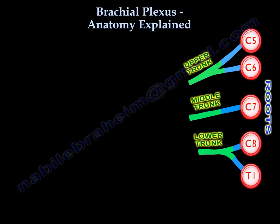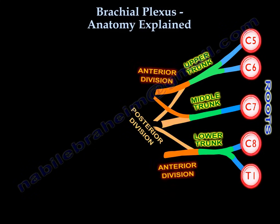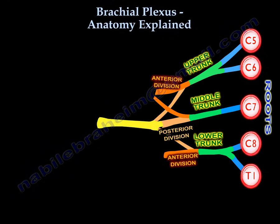Look at the ground and see the roots of the tree — after the roots, you find the trunk. Each of the three trunks will split into two divisions: an anterior division and a posterior division. The most important point: the three posterior divisions unite to form the posterior cord.